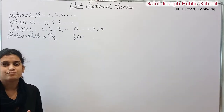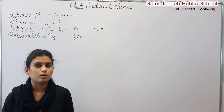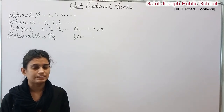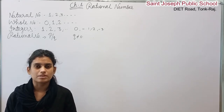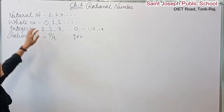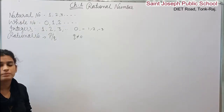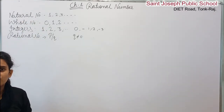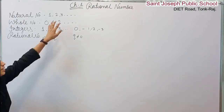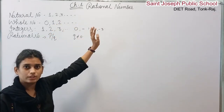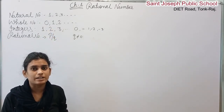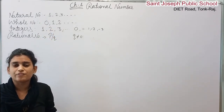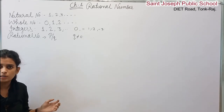Firstly, we already know about natural numbers, whole numbers, and integers. In this class, we discuss about rational numbers. Natural numbers start from 1, 2, 3, 4, 5 — they go to infinity. Whole numbers we studied in the previous class; they start from 0, and are called whole numbers.